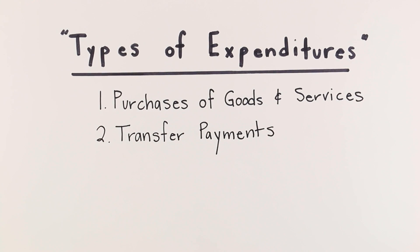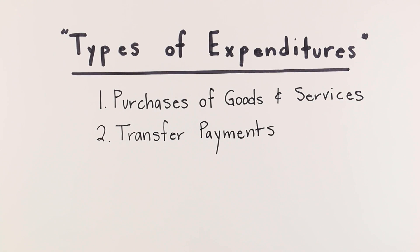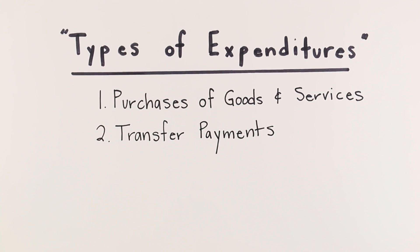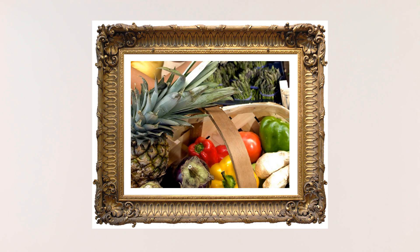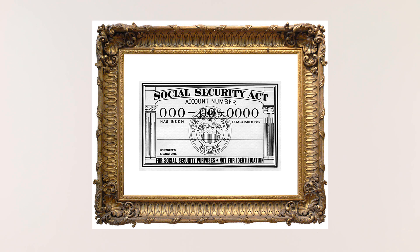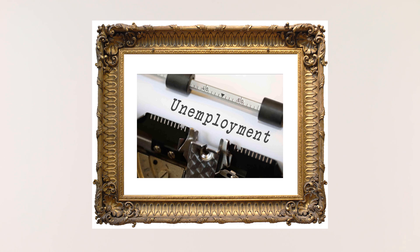The second type of government expenditure is called a transfer payment. Transfer payments are made to individuals. Examples of transfer payments include welfare payments, social security payments, and unemployment compensation.